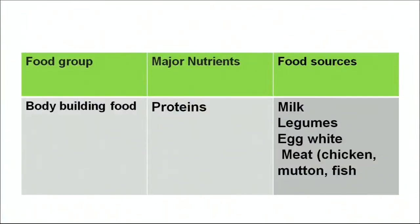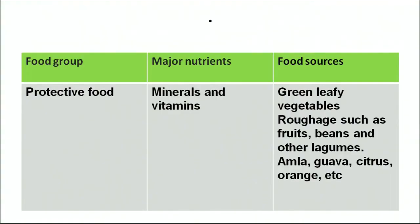Another category is body-building foods, whose major nutrients are proteins. We can get proteins from milk, legumes, egg white, meat, chicken, and fish. The next category is protective food — the major nutrients are minerals and vitamins, and food sources are green leafy vegetables, roughage such as fruits, beans, amla, guava, and all fruits and vegetables.